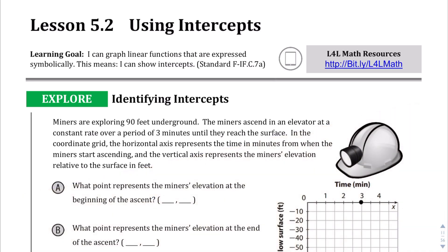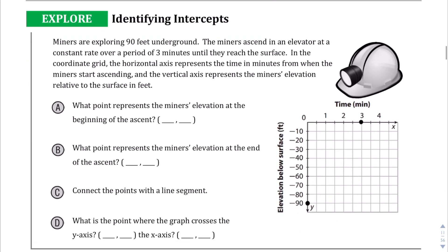We're at lesson 5.2 and we're going to be using intercepts to graph equations. We've actually been doing this in the last few pages, so this is just an extension of everything that we've been doing. In this explore section, we are given a context where we're told that miners are exploring 90 feet underground and they ascend in an elevator. So from 90 feet underground, they're ascending.